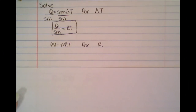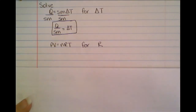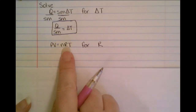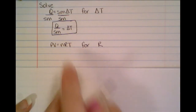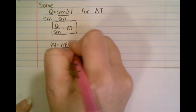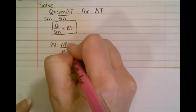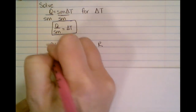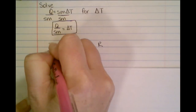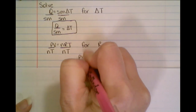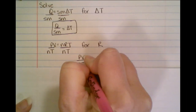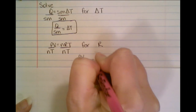Now what if I have something that looks kind of like this? I've got this PV equals NRT. This time I want to get the R all by itself. So again, everything is squished together, so everything is multiplied. The opposite of multiplication is division. So we're going to divide by everything that is not an R — we're going to divide by NT. If we do it to one side, we have to do it to the other. So that means we're going to get PV over NT equals R.